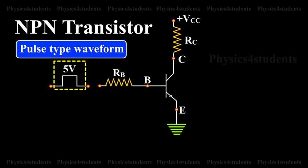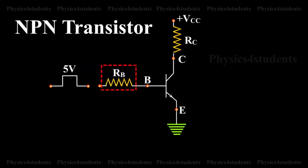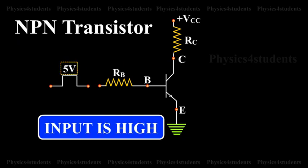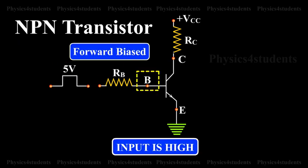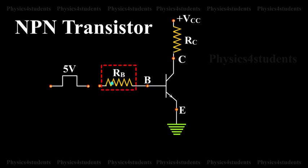A pulse type waveform is applied as the input to the transistor. When the input is high, the base emitter junction is forward biased and current flows through RB into the base.